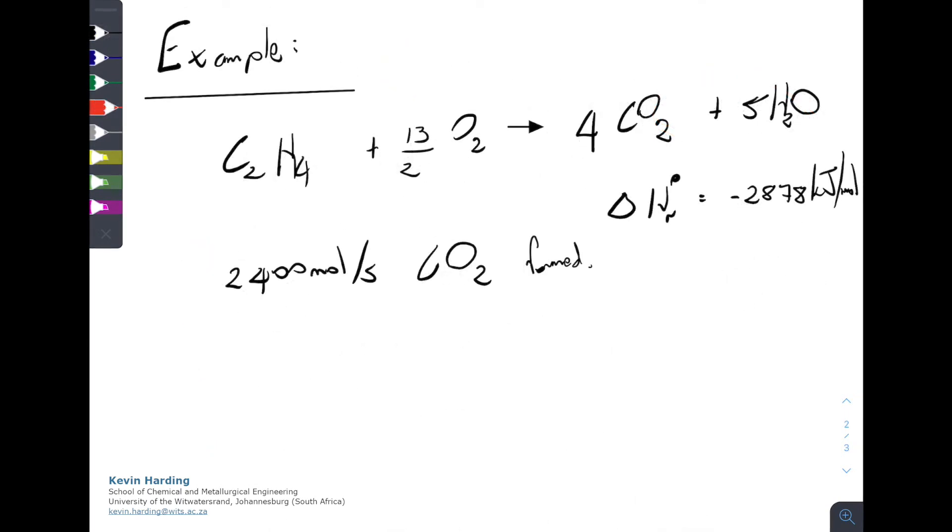If we look at a quick example on how we might use this, here is the example of C2H4 reacting with oxygen to form carbon dioxide and water. In this equation, we are given that the delta H of reaction is equal to minus 2878 kilojoules per mole, and we are asked if there is 2400 moles per second of carbon dioxide forming, what is the delta H for this reaction?